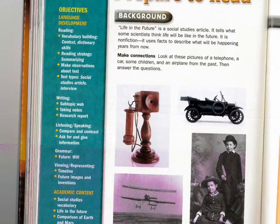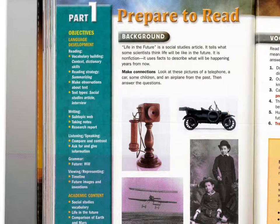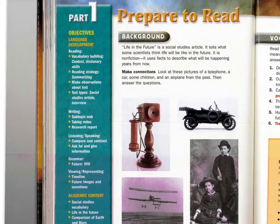We're looking at Part One, and you should look at these objectives — what should you be able to do by the end? Remember, your goal isn't just finishing the worksheets. Have you learned the vocabulary words? Have you practiced summarizing? Can you tell your observations about the text? Do you know the difference between an interview and a social studies article? Do you know how to work with a subtopic web, take notes, do a research report, compare and contrast, ask for and give information, use 'will' to express the future, understand what a timeline is, and talk about future images and inventions?